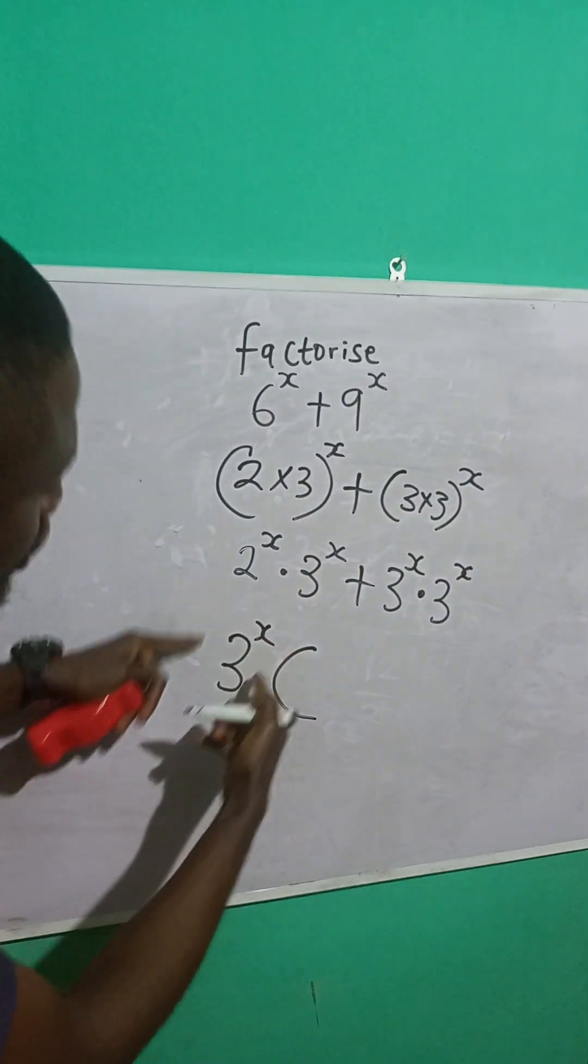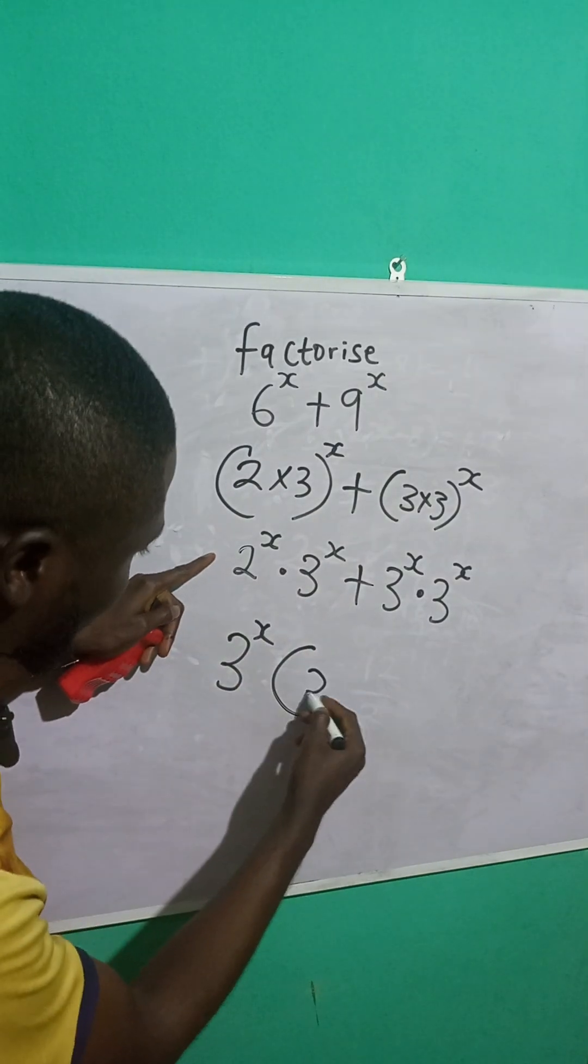3 raised to the power of x divided by what we have here. You see that if we cancel itself here, we are left to 2 raised to the power of x, right?